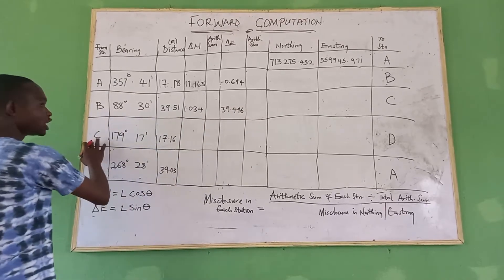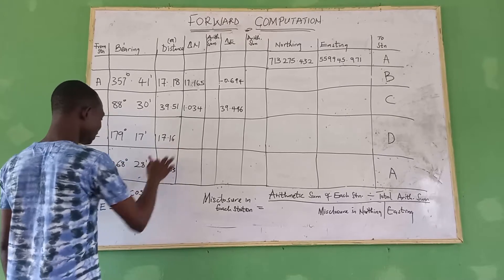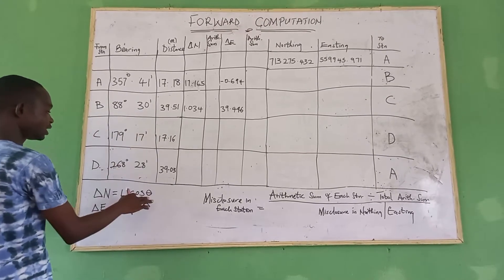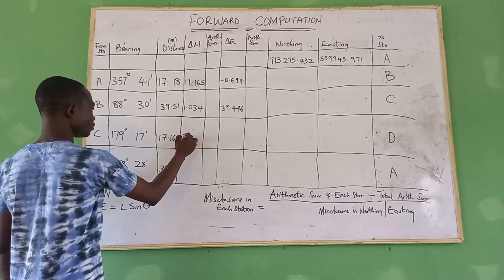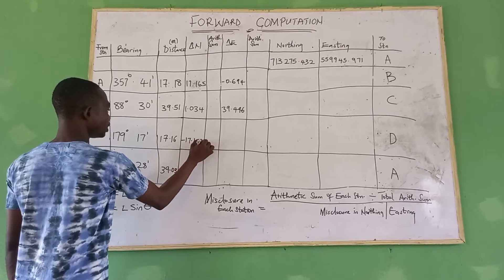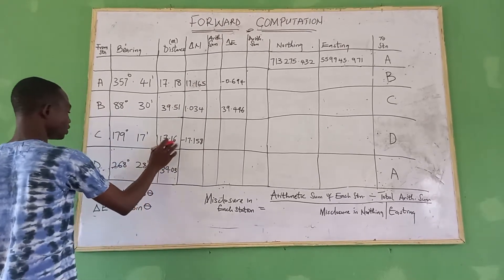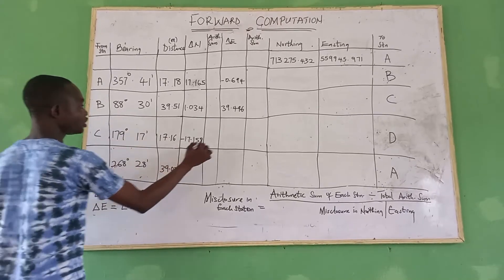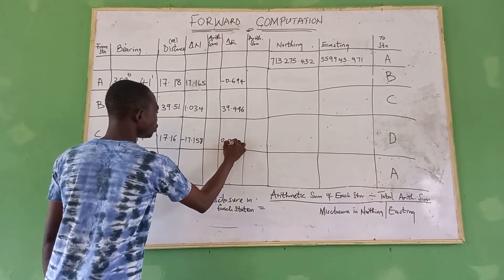Then for station C, we have delta northing: 17.16 × cos(179° 70'), which gives us minus 70.158. While for delta easting, we have 17.16 × sin(179° 70'), which gives us 0.214.